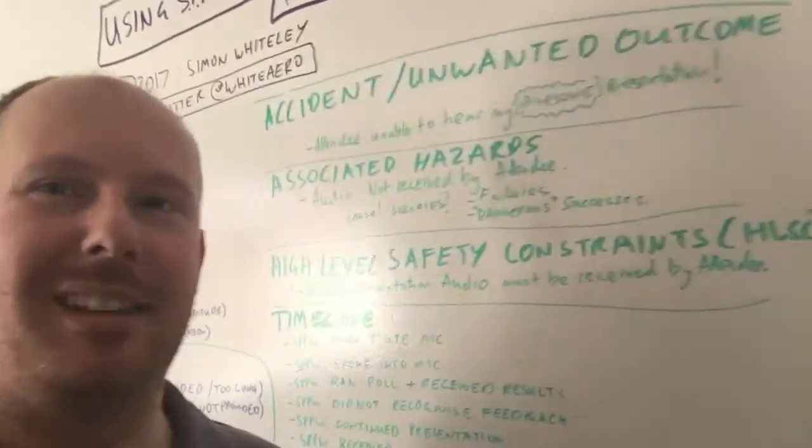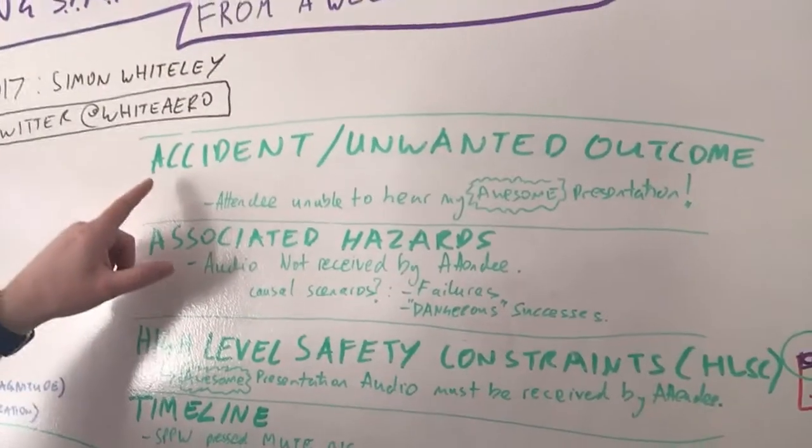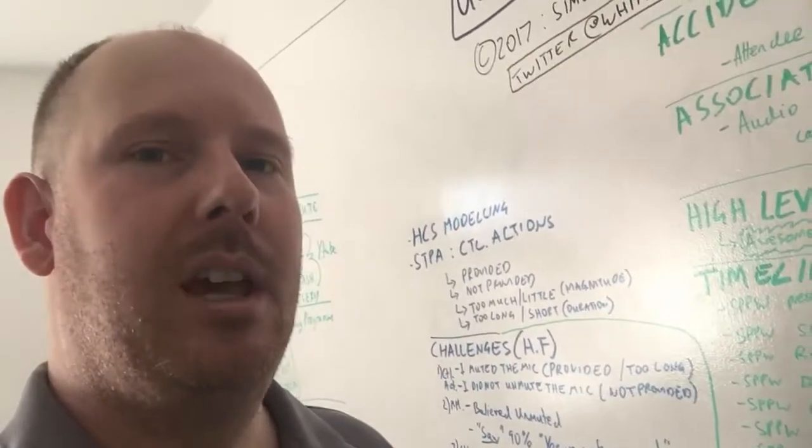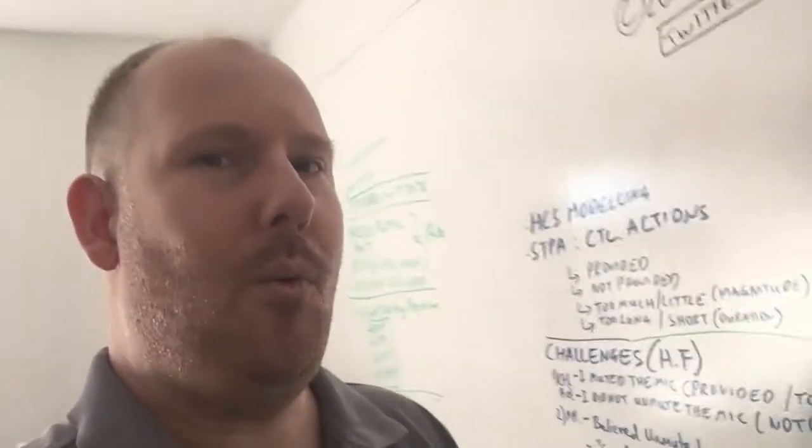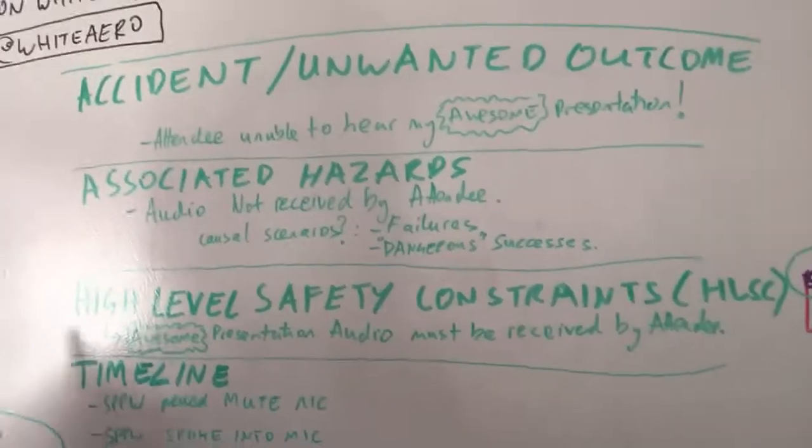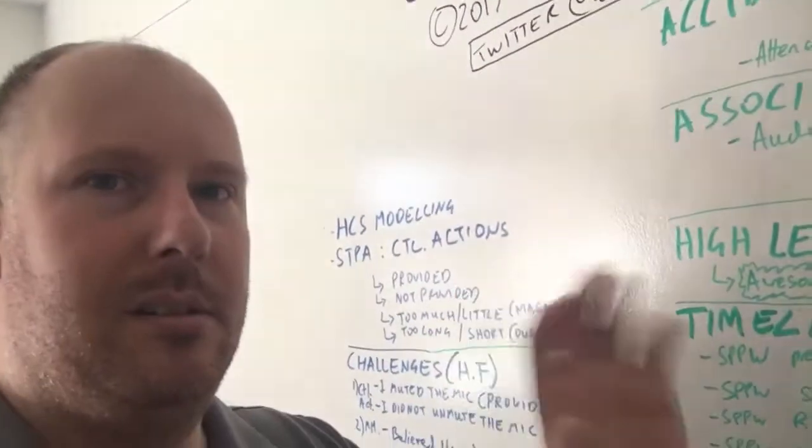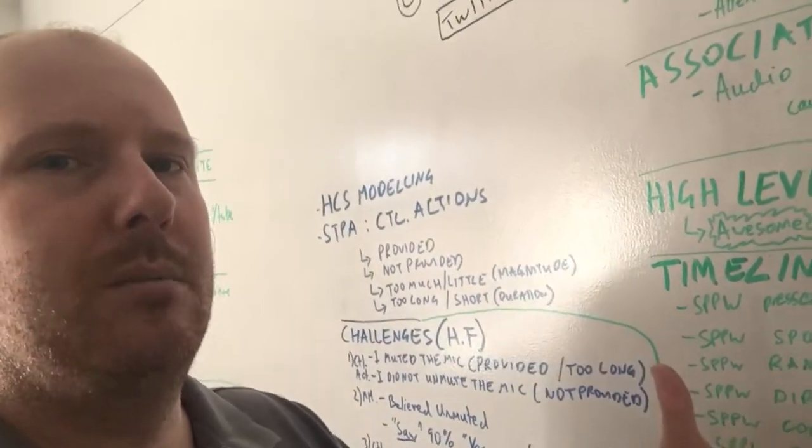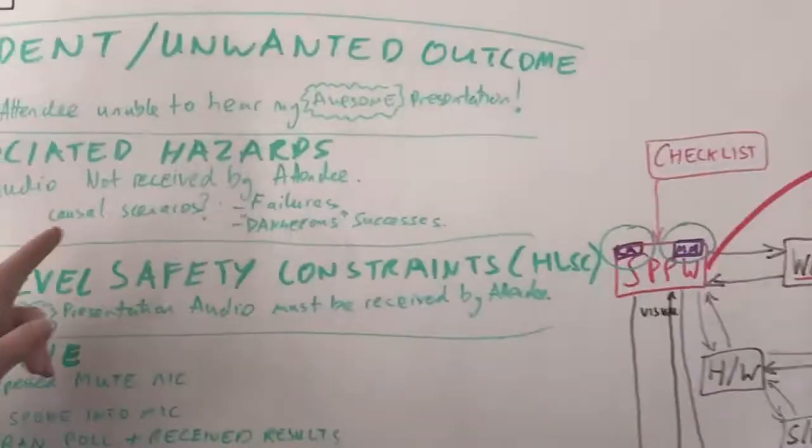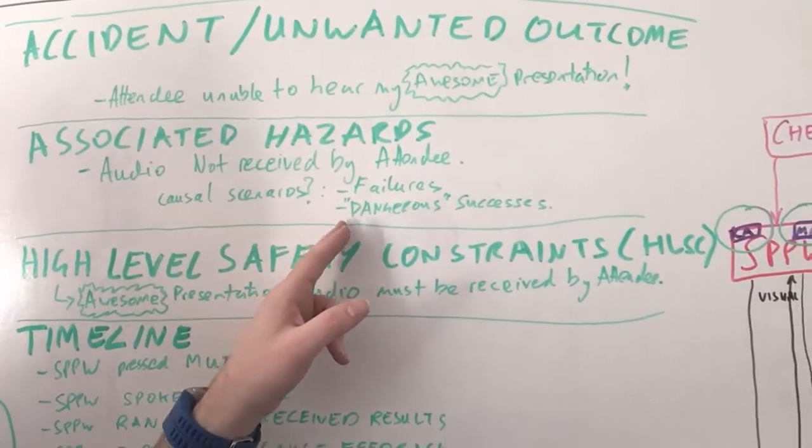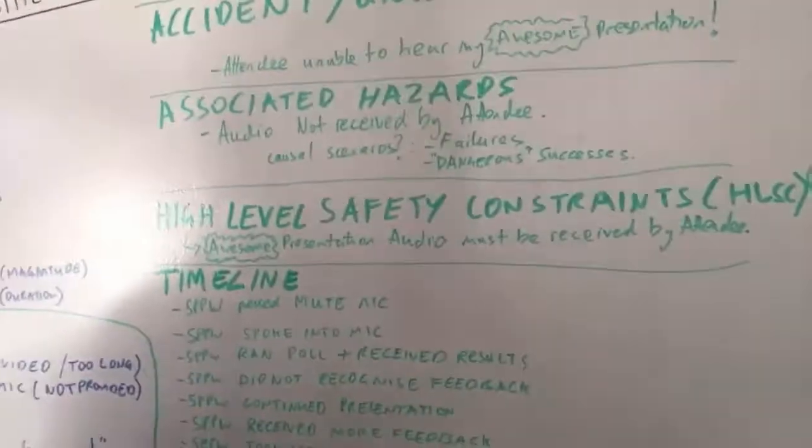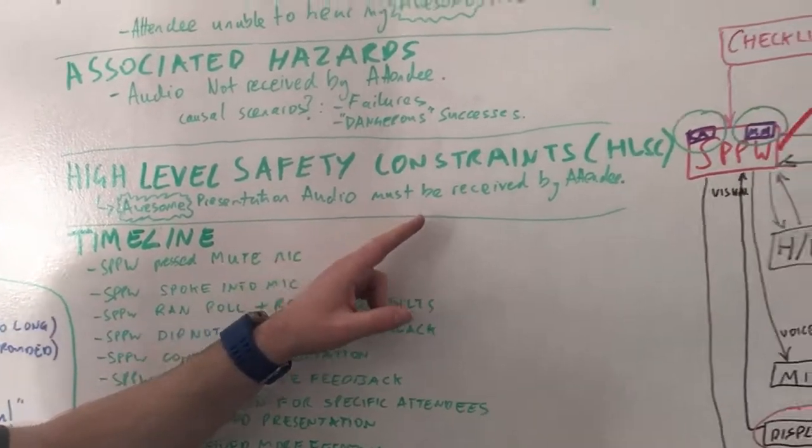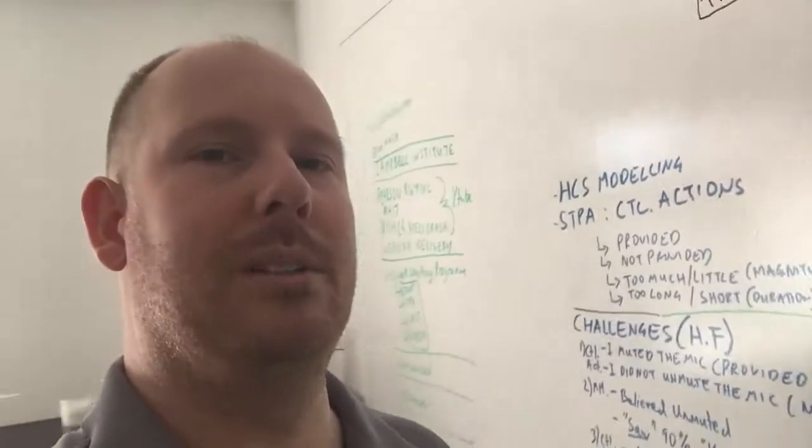So let's just do the basic CAST process then. First off, what do we do? Well, we identify the accident or unwanted outcome. Obviously, this is not a safety-related outcome, and I'm using this process just to highlight the points. But my unwanted outcome in this case is the attendee is unable to hear my awesome presentation. So that's what I want to avoid. What are the associated hazards with that then? Obviously, logically, and I'm only focusing on this particular set of hazards because it was about audio. So I focused on audio not being received by the attendee, and I've got to think about the causal scenarios. So there will be some failures, and there are likely to be some dangerous successes. So I successfully did something that was not right, that was unsafe. What are the high-level safety constraints? Well, this is easy. The awesome presentation audio must be received by the attendee. They must hear what's going on. Otherwise, what's the point of the webinar?